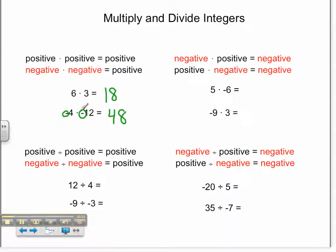How about division? Here we have positive 12 divided by 4 — that answer is 3. When we have negative 9 divided by negative 3, the answer is a positive 3, because the signs are the same. We have a negative and a negative, just like here we had a positive and a positive.